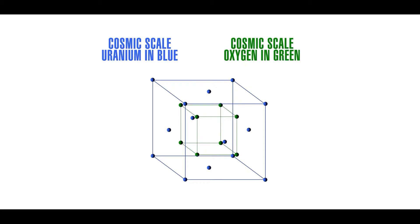The inner green cube locates the positions of eight cosmic scale oxygen atoms, centered on the green spheres. All eight are at the cube corners.